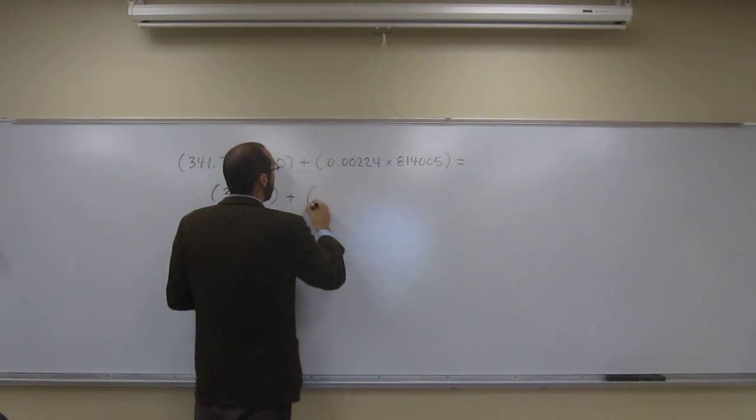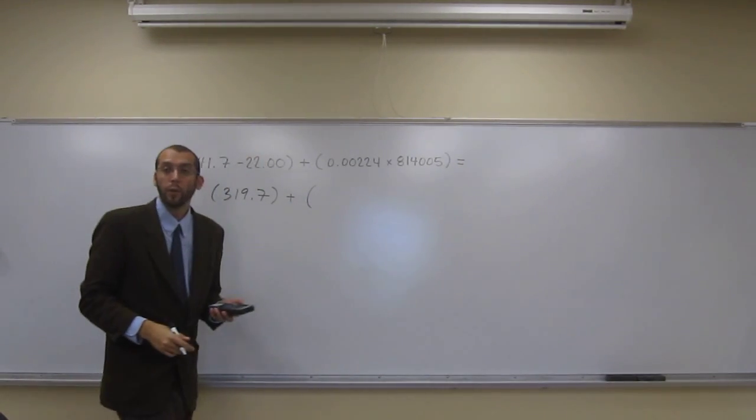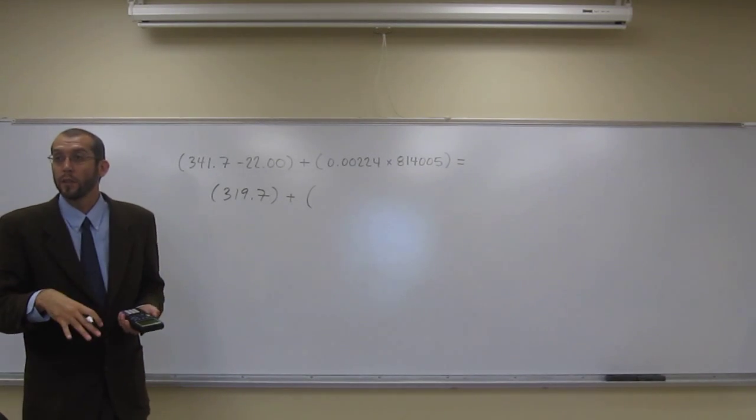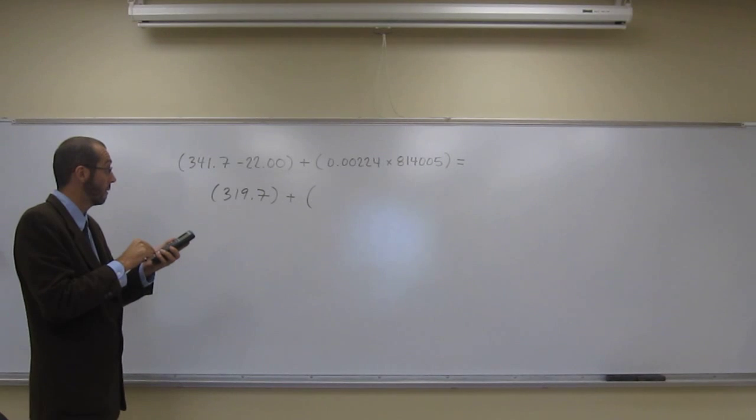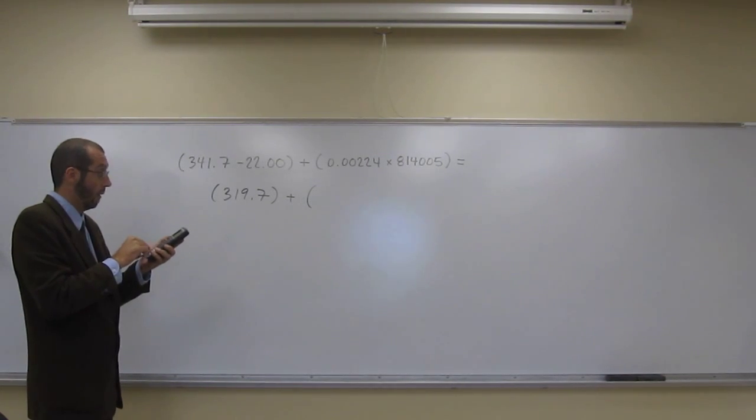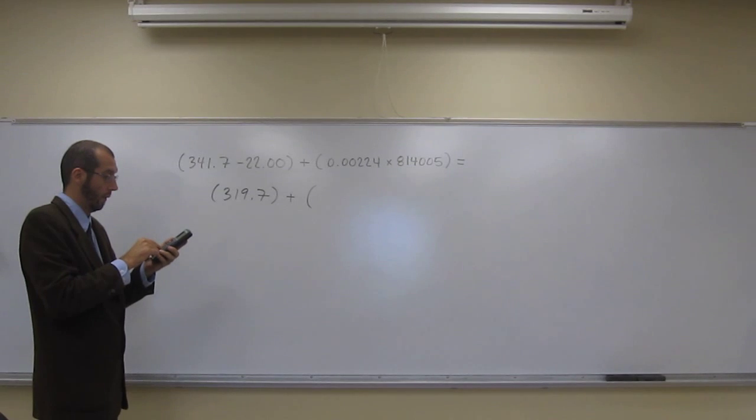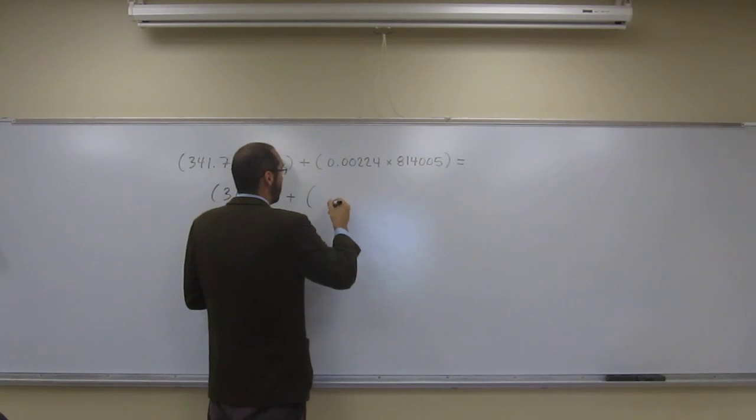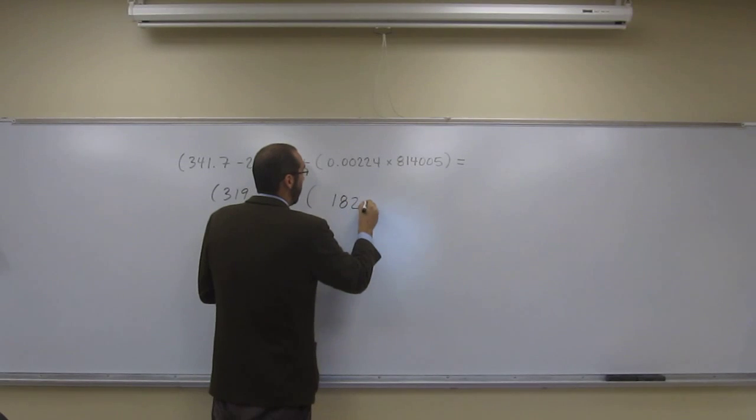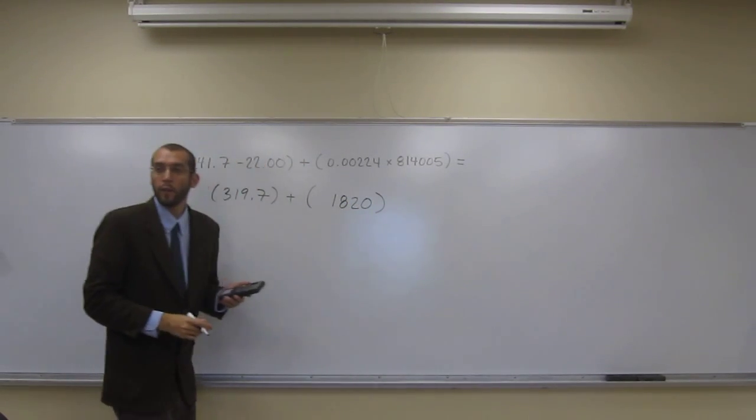And then here, multiplication rules tells us we go to the least amount of significant digits. So 0.00224 times 1.814. And that gives us, so the three sig figs, it's gonna be 1820, like that.